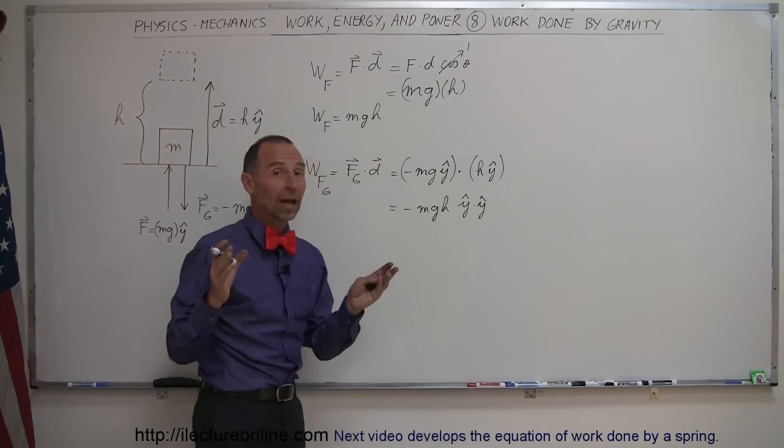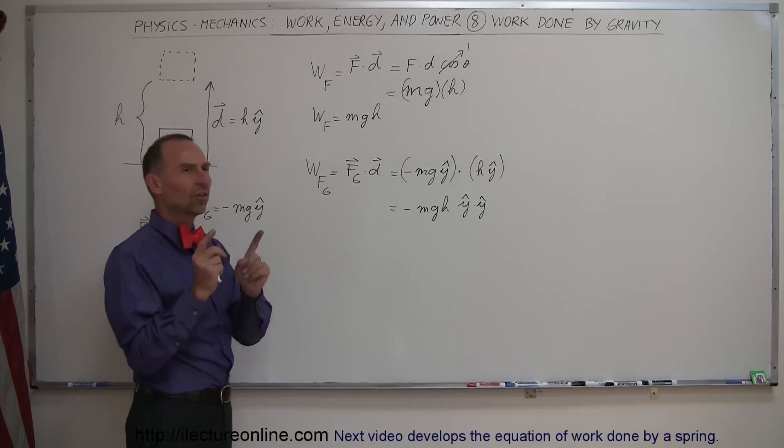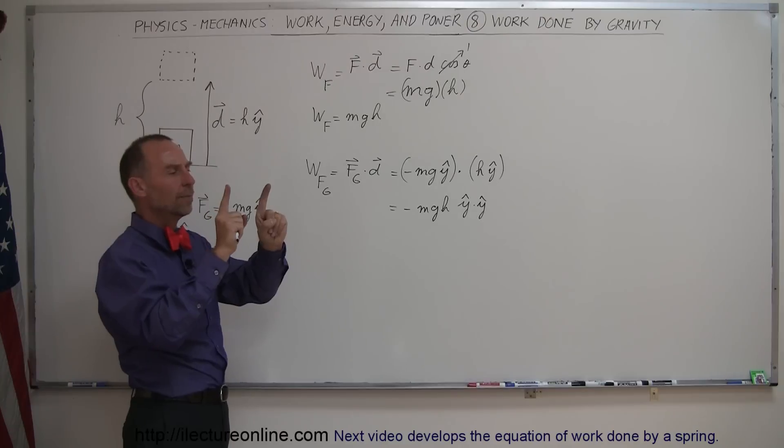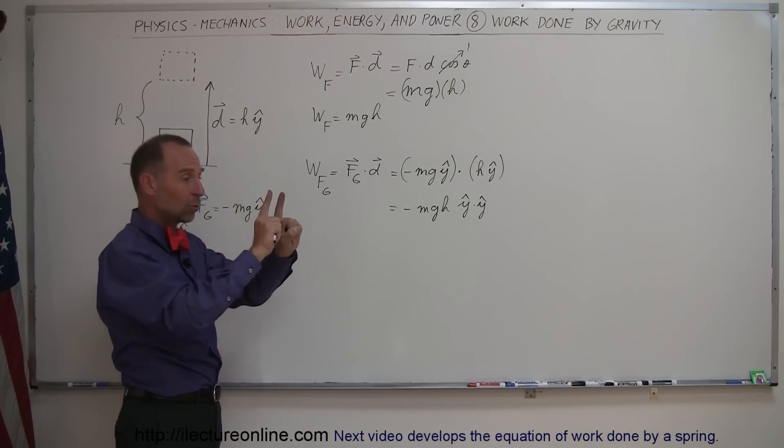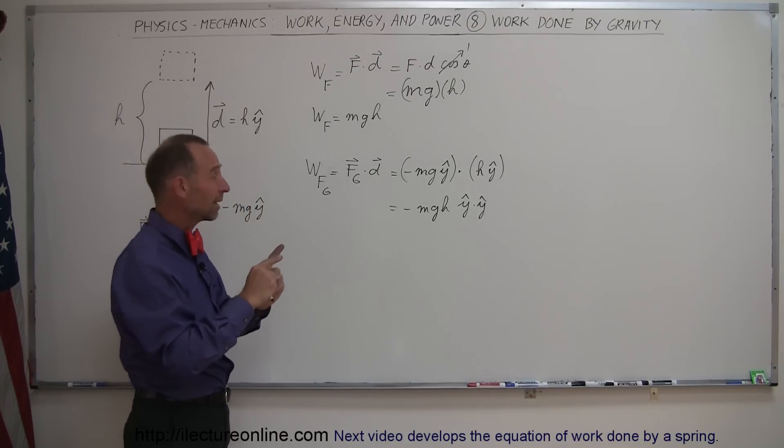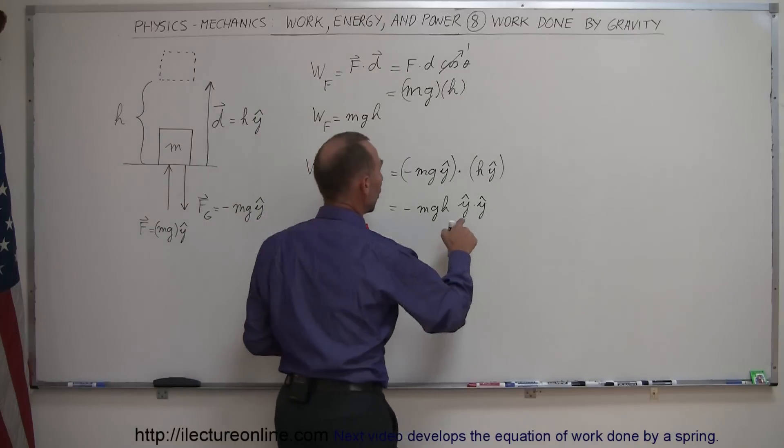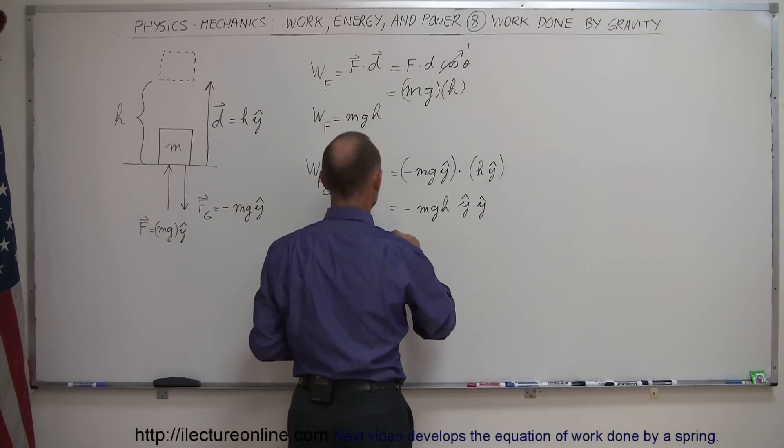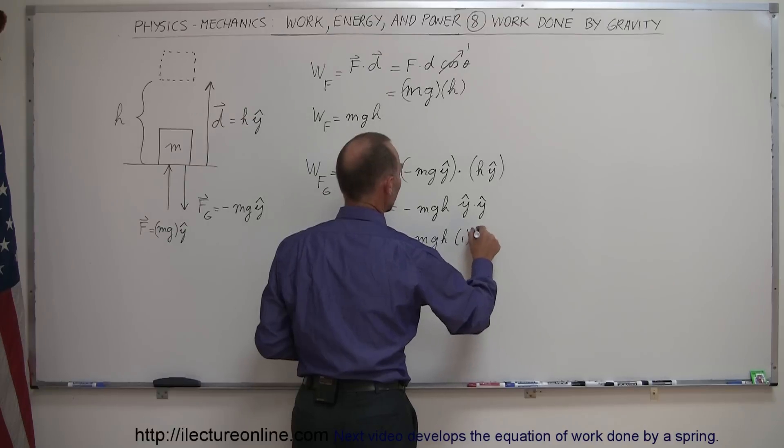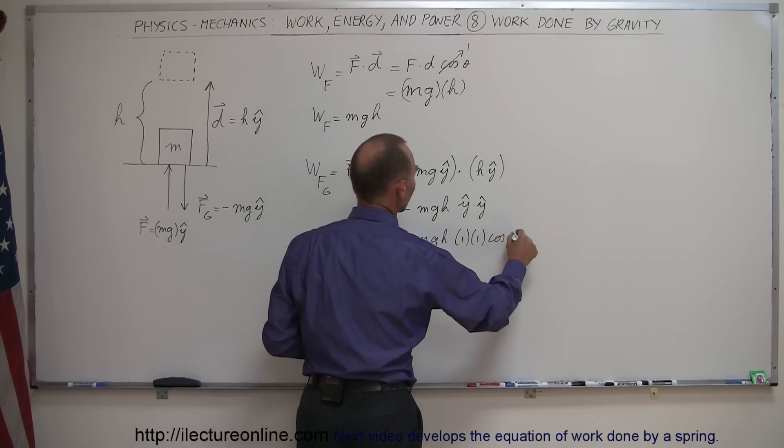So this is equal to minus mg h times y dot y. So these are the two unit vectors that are now dotted together, and of course, since they're only one unit long each, and they're pointing in the same direction, this is equal to 1 times 1 times the cosine of the angle between them, so minus mg h times 1 times 1 times the cosine of theta.